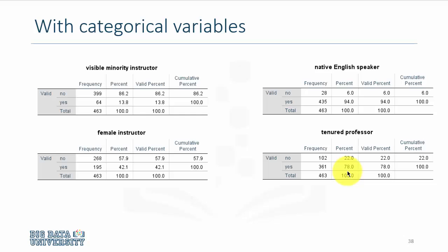Essentially, remember, you have to appreciate the data set where multiple courses were taught by the same professors. So this 78% refers to courses, not to the individuals. So it's more appropriate to say 78% of the courses were taught by tenured professors rather than saying that 78% of the professors were tenured.